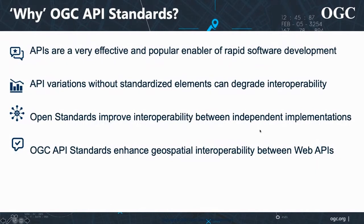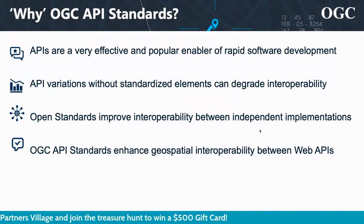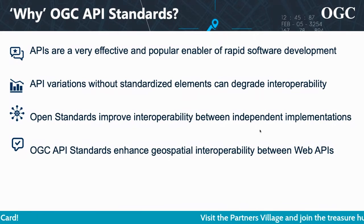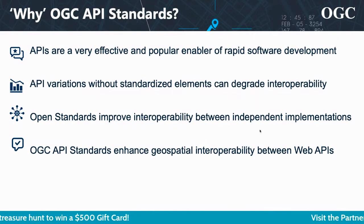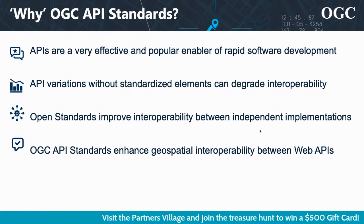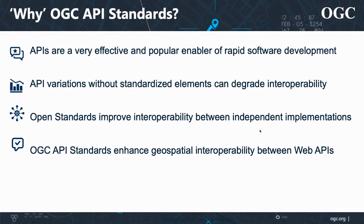Why consider OGC API standards? APIs have been proven to be a very effective and popular enabler of rapid software development. With the proliferation of APIs and API specifications, where there's variation in how those APIs handle location information, that variation can degrade interoperability. Given that open standards have been proven to improve interoperability between independent implementations, OGC has embarked on a program to develop OGC API standards that enhance geospatial interoperability between web APIs, and those APIs can be implemented by any organization.